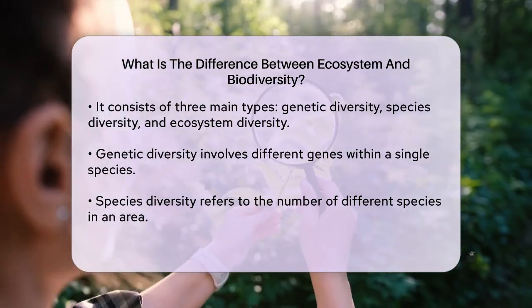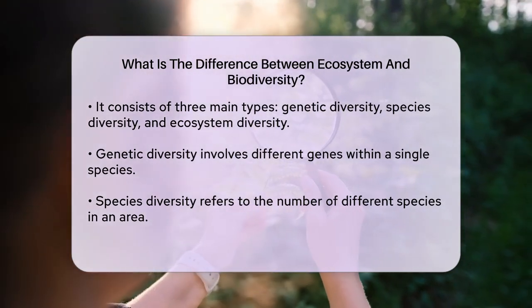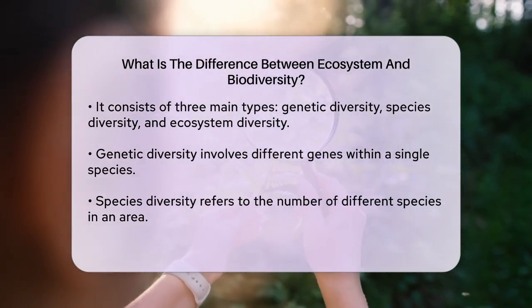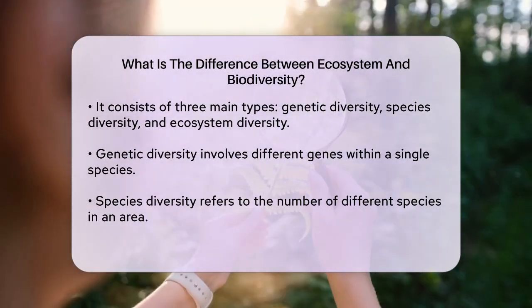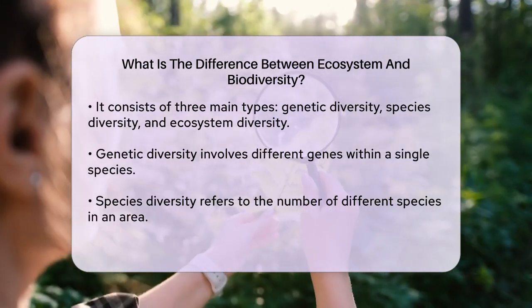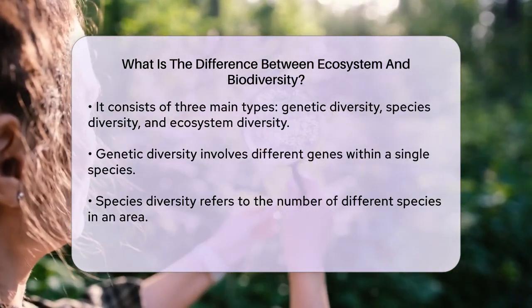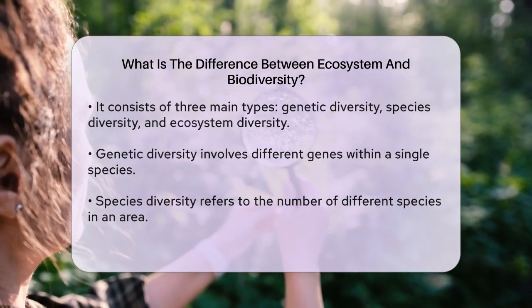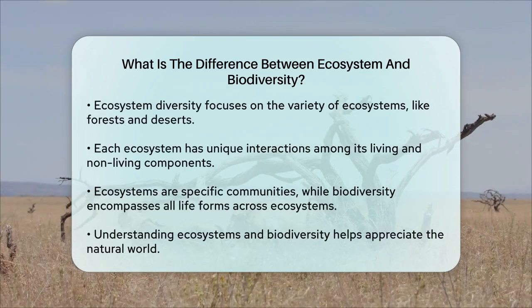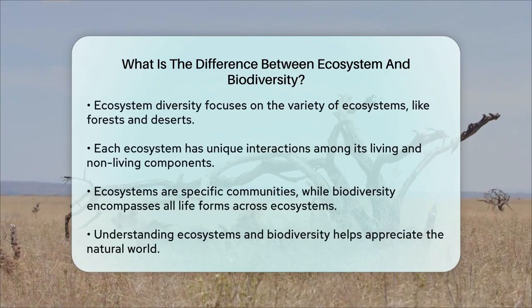Ecosystem diversity, which is part of biodiversity, focuses on the variety of different ecosystems in a given area. This could include forests, deserts, coral reefs, and more. Each of these ecosystems has its own set of interactions between living and nonliving components, just like we discussed earlier.